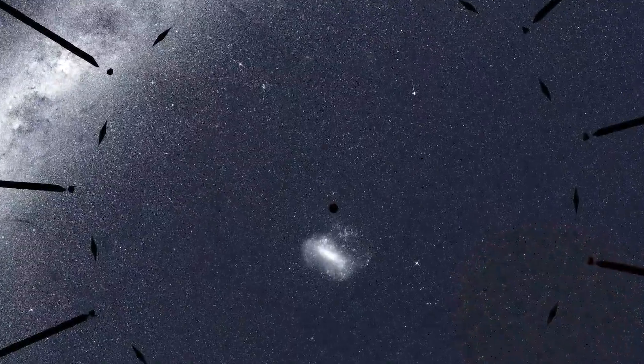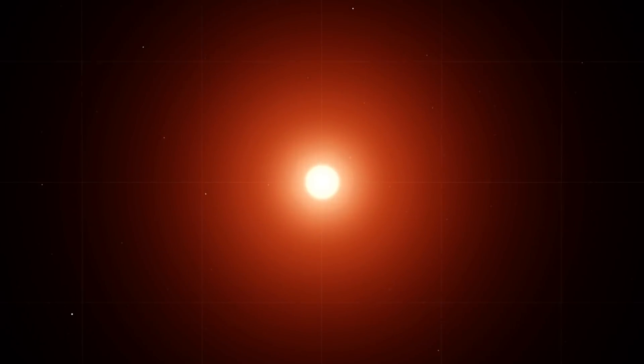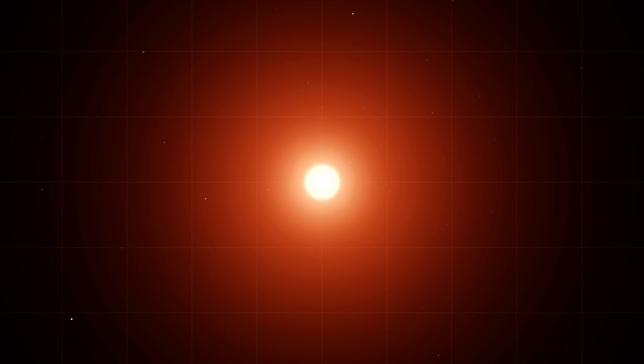One star where TESS saw transits is TOI 700. It's a red dwarf about 40% the mass and size of our Sun, and roughly half its temperature.